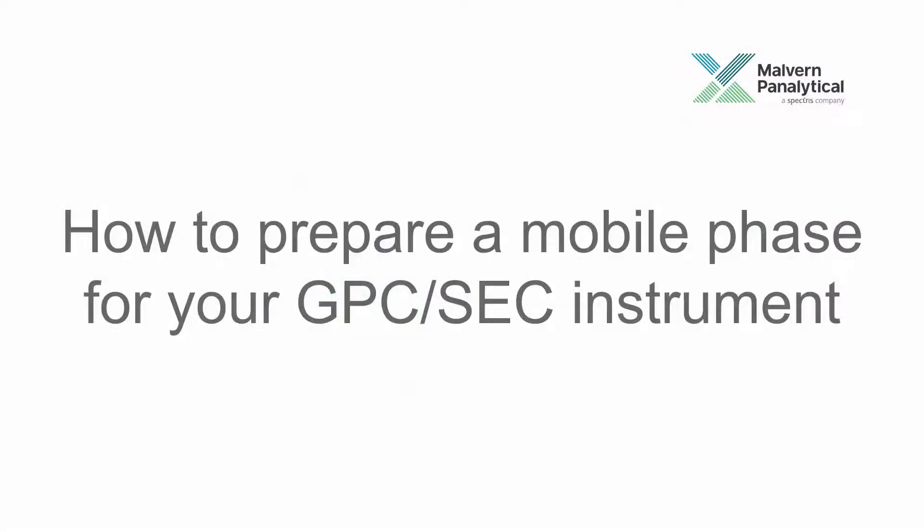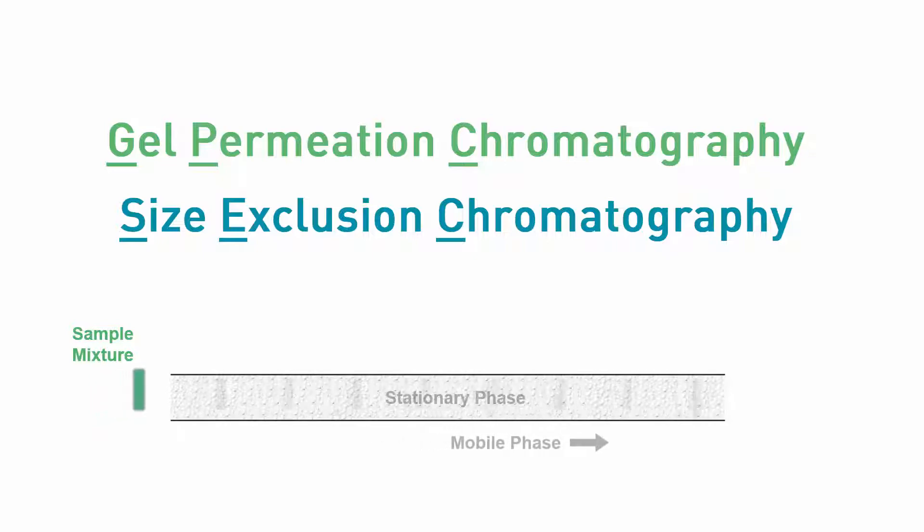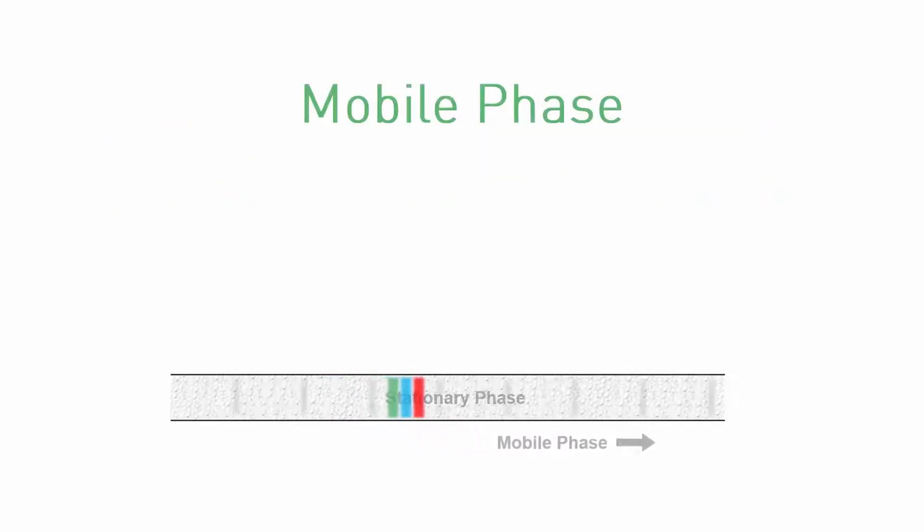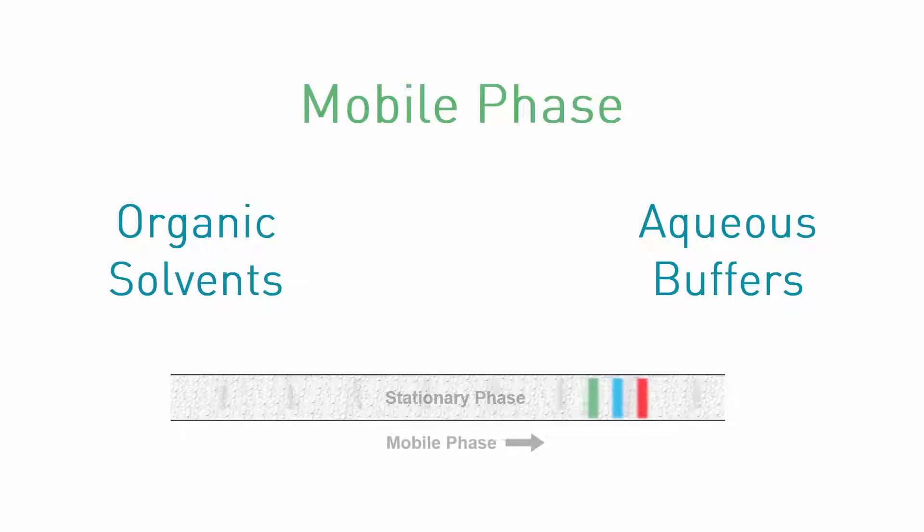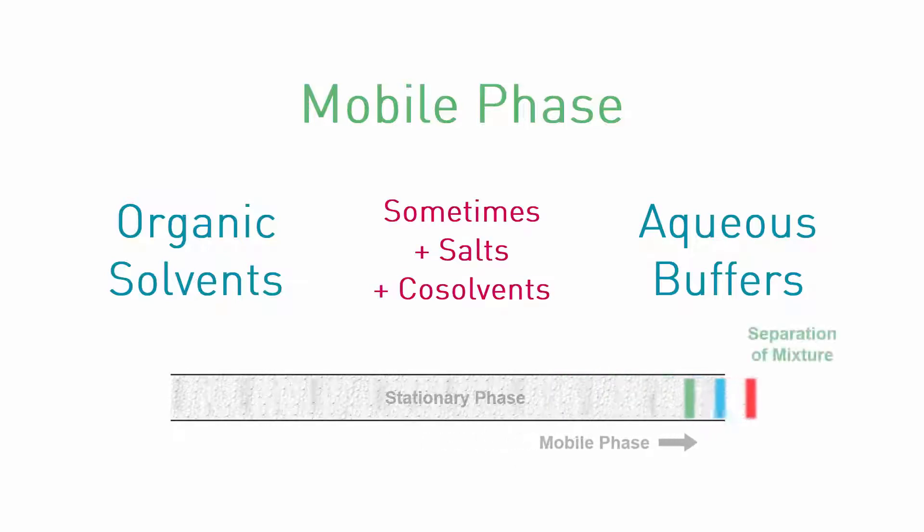How to prepare a mobile phase for your GPC-SEC instrument. GPC-SEC is a type of liquid chromatography, which relies on a liquid mobile phase to carry the sample through the columns and detectors. A variety of solutions can serve as this mobile phase, from organic solvents to aqueous buffers, and sometimes with additives such as salts and co-solvents.